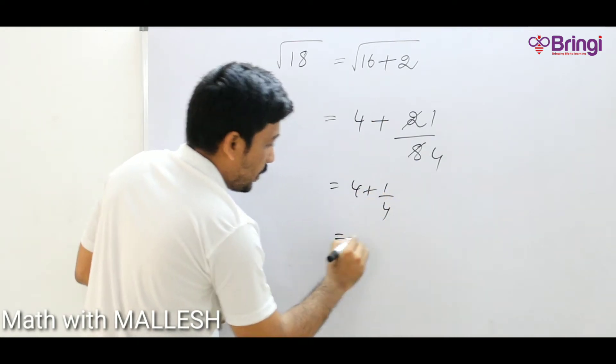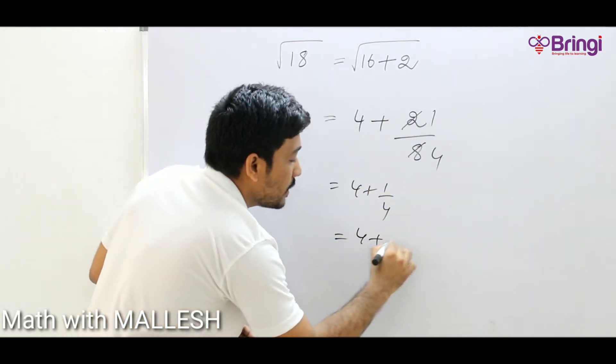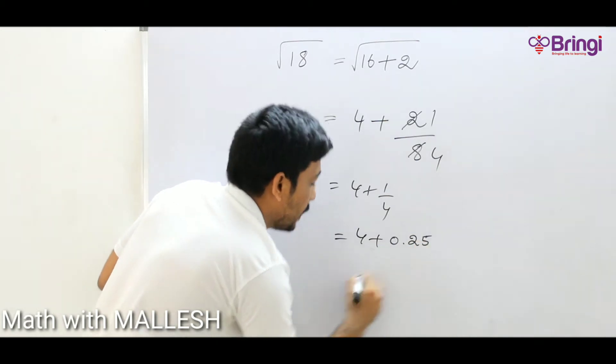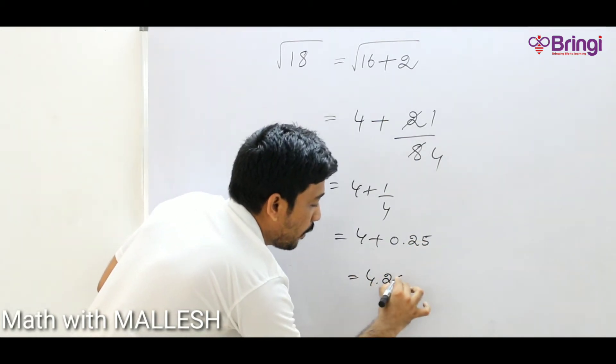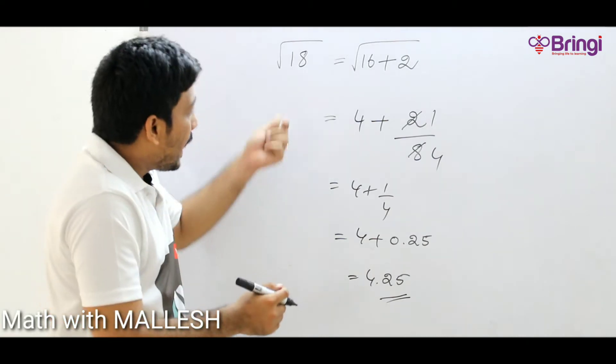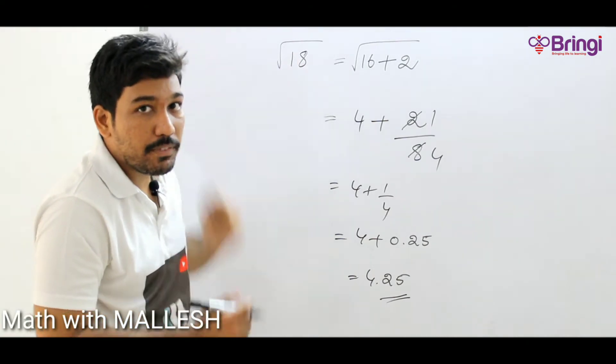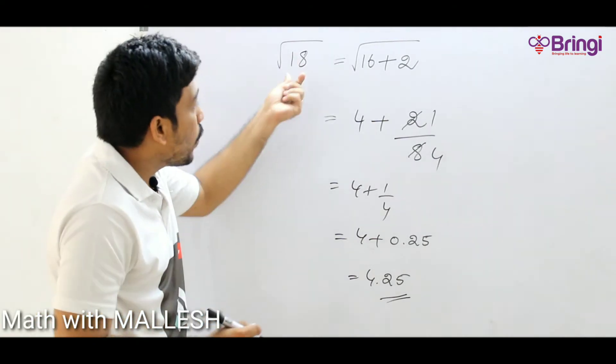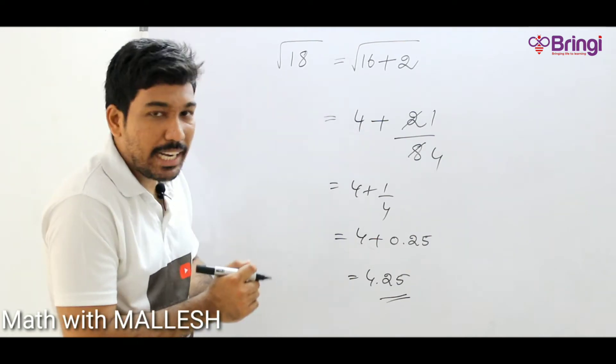So 4 plus 0.25, final answer is 4.25. This is the method how to find the exact value of non-perfect square root numbers. If you have doubt, open calculator and type root 18 value, you will get almost closest value to 4.25.